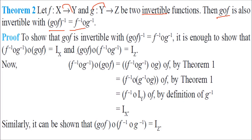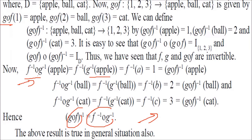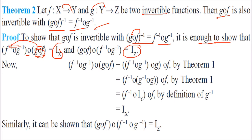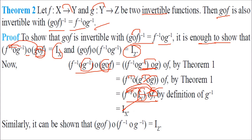Theorem: If f: X → Y and g: Y → Z are invertible functions, then gof is also invertible with (gof)⁻¹ = f⁻¹∘g⁻¹. To show this, demonstrate that (f⁻¹∘g⁻¹)∘(gof) = i_X and (gof)∘(f⁻¹∘g⁻¹) = i_Z. Using g⁻¹∘g = i_Y and f⁻¹∘f = i_X, the compositions cancel to give identity.